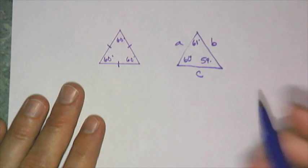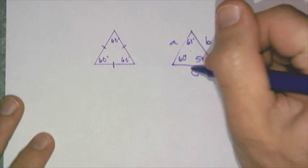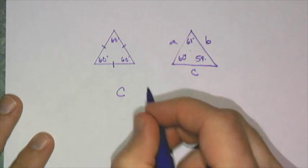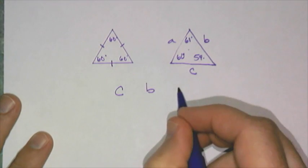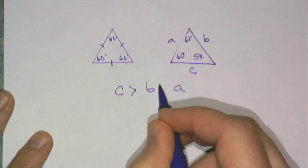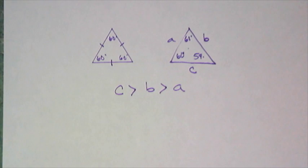So, I think that C has to be the biggest side, B is in the middle, and A is the smallest side. And I would write that as C greater than B greater than A. And in fact, that's true. That's always true.